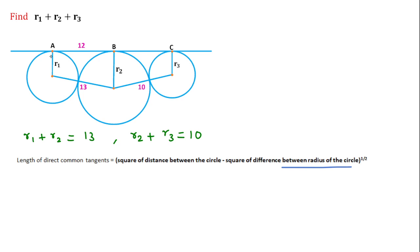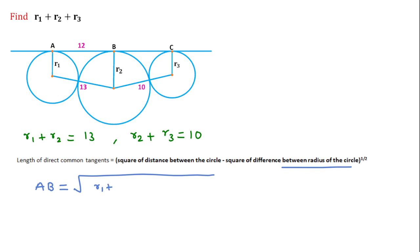The length of the direct common tangent between the first two circles is AB, and the length of the direct common tangent between the next two circles is BC. So for these two circles, we can write AB equal to the square root of the distance between the centers, which is r1 plus r2, whole squared, minus the difference between the two radii, which is r2 minus r1, whole squared.